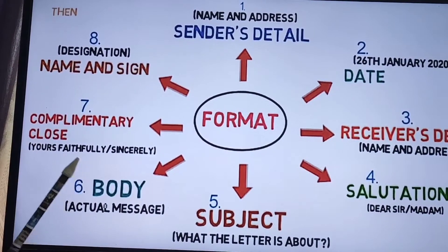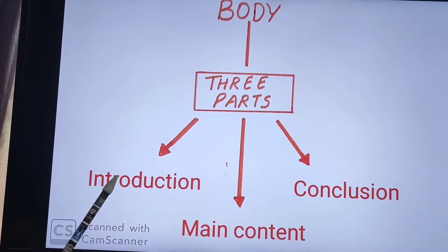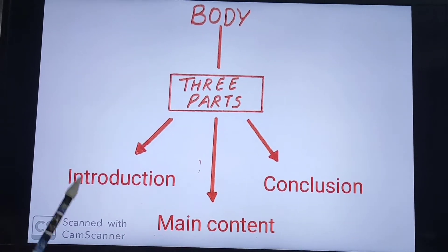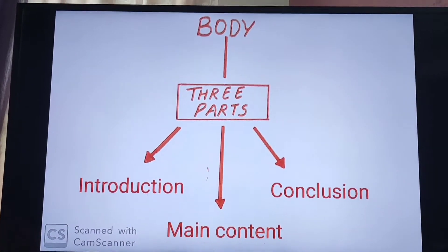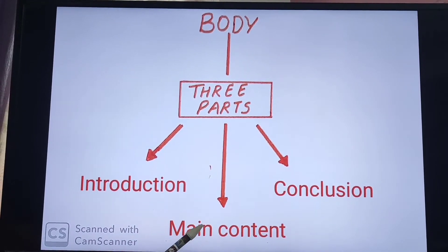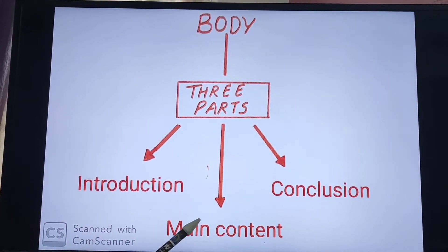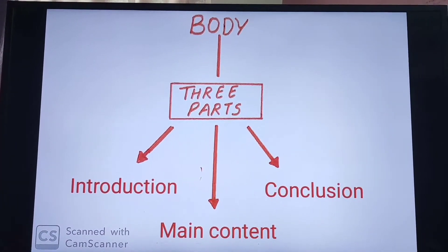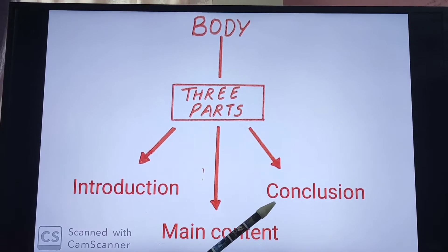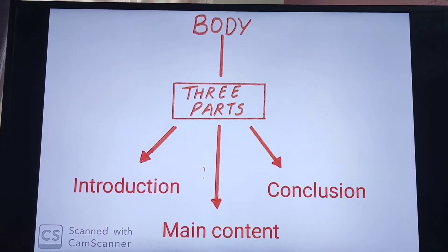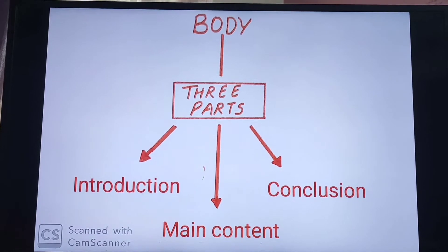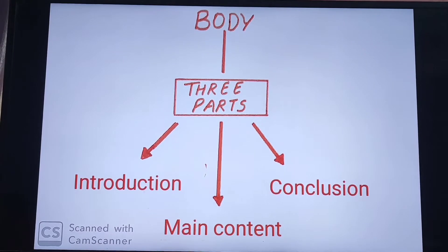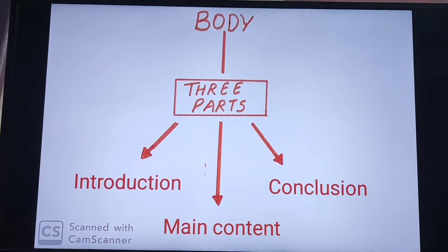Then comes body. There are 3 body parts. Introduction, in which you will introduce yourself and the problem in brief. Then the main content, which is the second part of the letter — you should write the causes and effects of the problem in detail. Third part of the body is conclusion, which will include a small mention of a suggestion for solving the problem. Remember that the tone of the content should be formal.